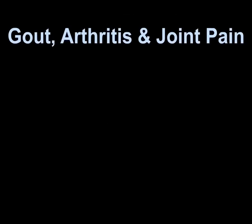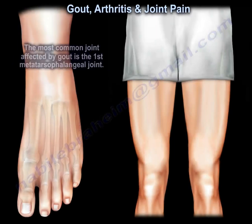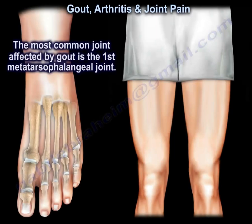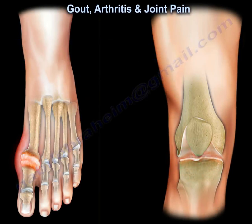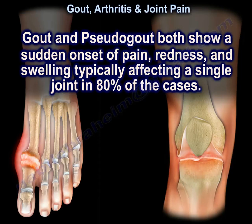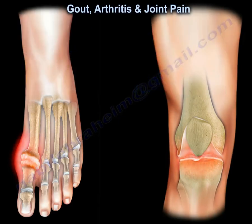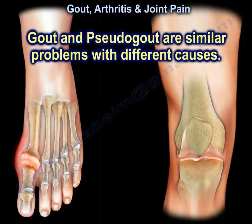Gout, Arthritis, and Joint Pain. The most common joint affected by gout is the first metatarsophalangeal joint. The most common joint affected by pseudogout is the knee joint. Gout and pseudogout both show a sudden onset of pain, redness, and swelling, typically affecting a single joint in 80% of cases. Gout and pseudogout are similar problems with different causes.